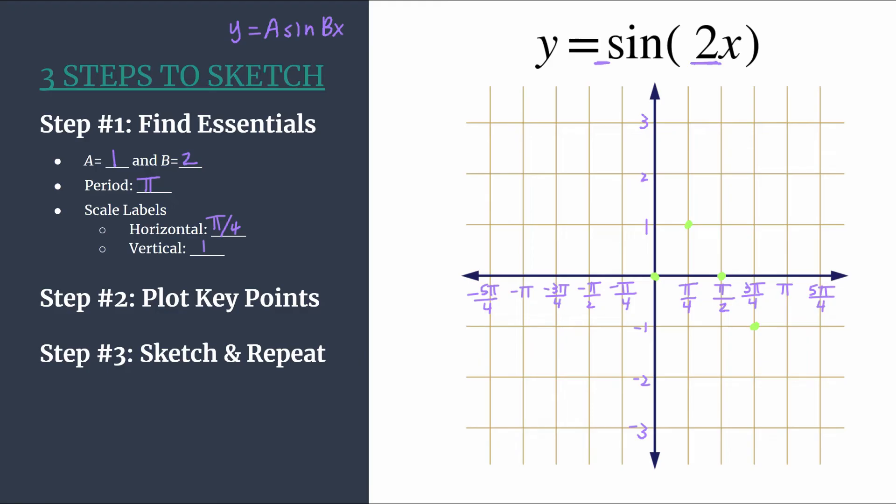Before we move on to sketch step three, I like to go ahead and just put one point in a different color that'll be the start of the next cycle. If you're not using different colors, just put a point, and I'm really just using these different colors to show you this will be the start of a new cycle. So now we can do step three. Sketch this cycle and then repeat to get as many cycles as we want.